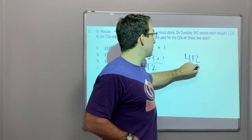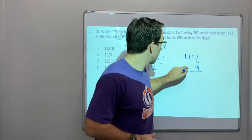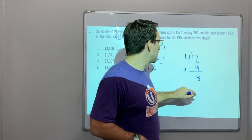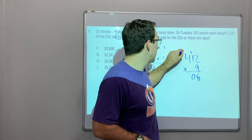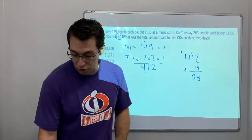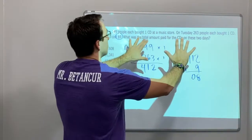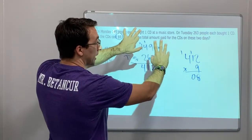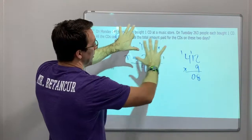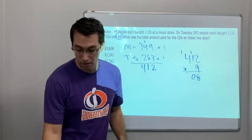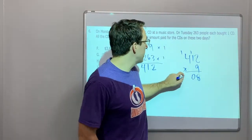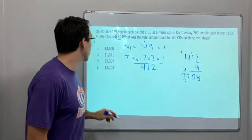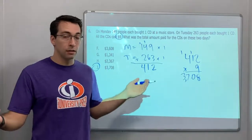412 times 9: 9 times 2 is 18; 9 times 1 is 9, plus 1 is 10; 9 times 4 — using the nines trick, the fourth multiple of nine: 36 — plus 1 is 37. So 412 times 9 equals 3,708 dollars. Answer J is our answer.